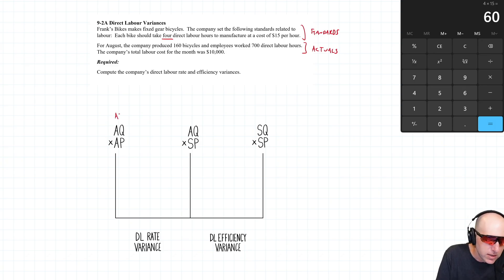AQ for labor is the actual quantity of labor hours worked. You often see this denoted as AH (actual hours) in other textbooks. I just say AQ to be consistent—less to memorize. Everything's AQ, AP with me. AP is often AR (actual rate) in other textbooks, but I just say AP—price per hour of labor. Our actual quantity of labor was 700 direct labor hours.